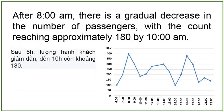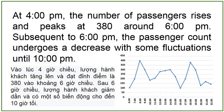After 8 a.m., there is a gradual decrease in the number of passengers, with the count reaching approximately 180 by 10 a.m. After 4 p.m., the number of passengers rises and peaks at 380 around 6 p.m. Subsequent to 6 p.m., the passengers' count undergoes a decrease with some fluctuations until 10 p.m.